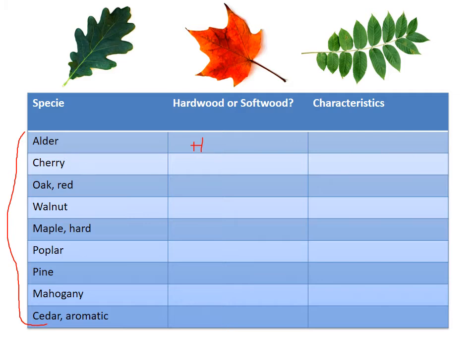Cherry is also a hardwood. This is not the cherry of fruit, but it's a relative of that tree. The American black cherry grows on the east coast — it grows tall and big and produces a small black cherry that birds eat. It's a deep reddish brown that darkens with age. Walnut lightens over time; cherry darkens.